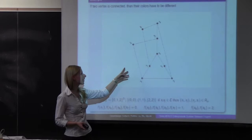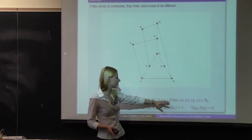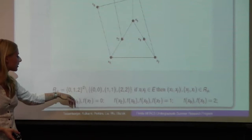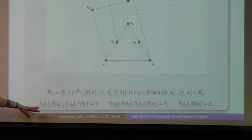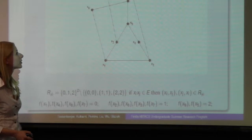We can rephrase this problem. We can have variables at the nodes, and if we have variables which share an edge, then they should be in a certain relation, because 0, 1, and 2 are the colors. We are looking for a solution function which maps the variables to the colors and tells us how to color the nodes so that they satisfy this relation.